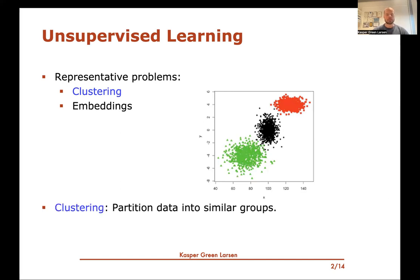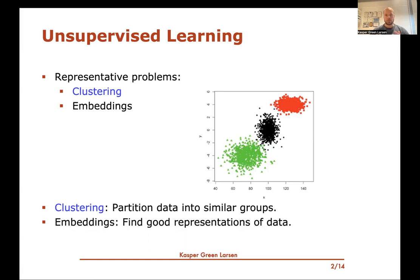Clustering is basically about partitioning data into similar groups. Embeddings, which we also have a sequence of videos on, is about finding alternative good representations of your data that might be different from the one they're given in to begin with.